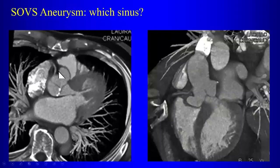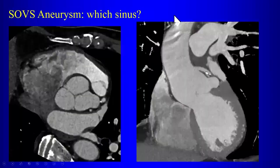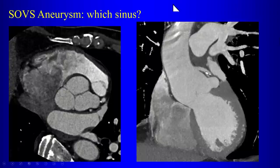Here you can see a right sinus of Valsalva aneurysm — the right coronary artery is visible coming off here. Note its close relationship to the right ventricle. An aneurysm of the left sinus of Valsalva is extremely rare; notice how close it is to the left atrium, especially the left atrial appendage.